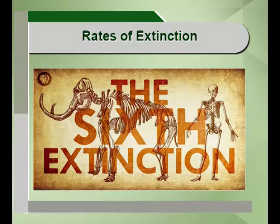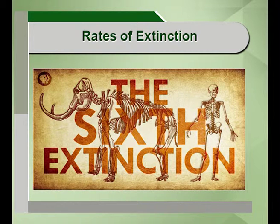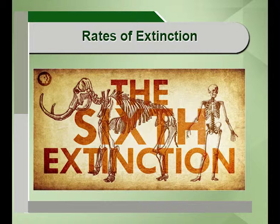Coming to the rates of extinction: birds and mammals are the more studied animals as far as rates of extinction are concerned, because of their large size. For smaller animals, almost 99 percent of extinction rates are estimates — like bacteria, fungi, and other smaller organisms. Even for larger animals like birds and mammals, the extinction rate is not always accurate or is sometimes difficult to calculate.